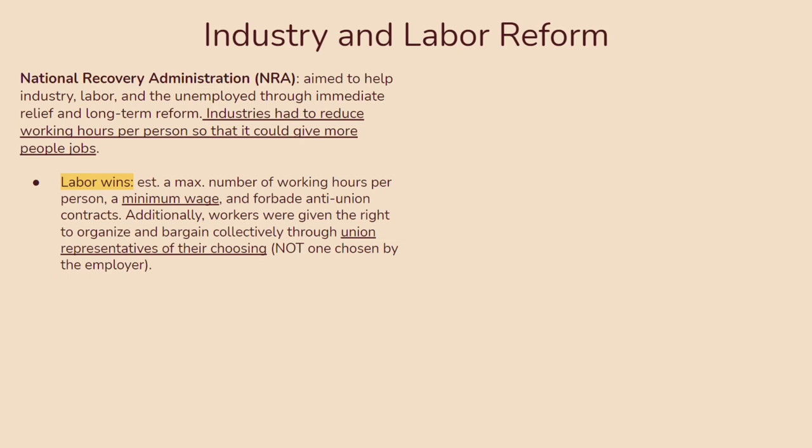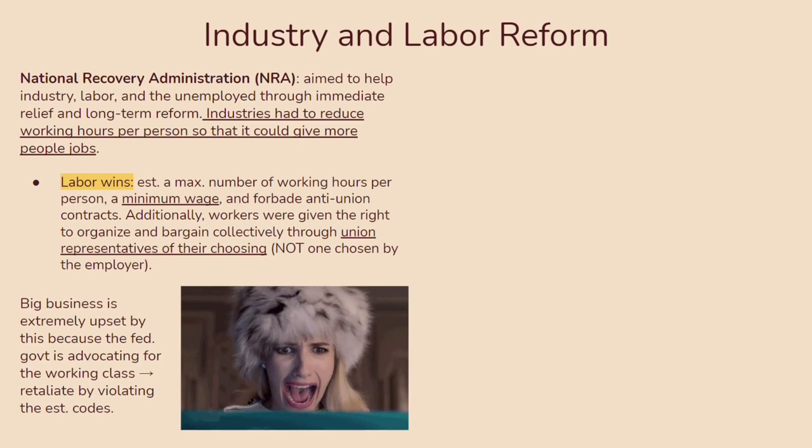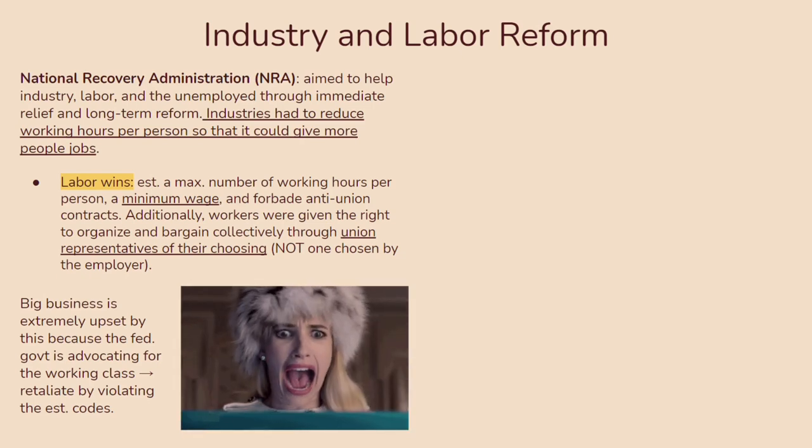In general, the labor movement had a lot of key victories during this time. They established a maximum number of working hours per person, a minimum wage, and forbade anti-union contracts. Additionally, workers were given the right to organize and collectively bargain through union representatives of their choosing. Usually the union representative would be chosen by the employer, so naturally they would represent the employer's interests. But now these workers were able to choose a representative who would directly address their needs, ensuring their demands came across and that they got a better compromise.